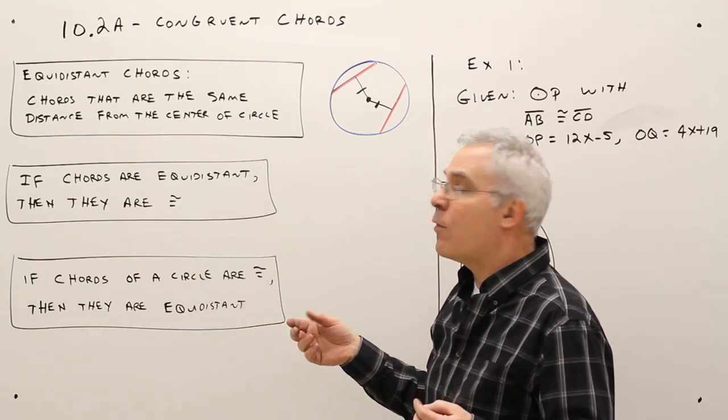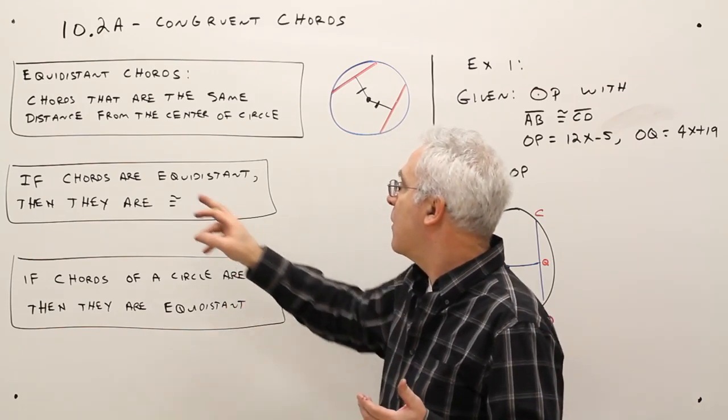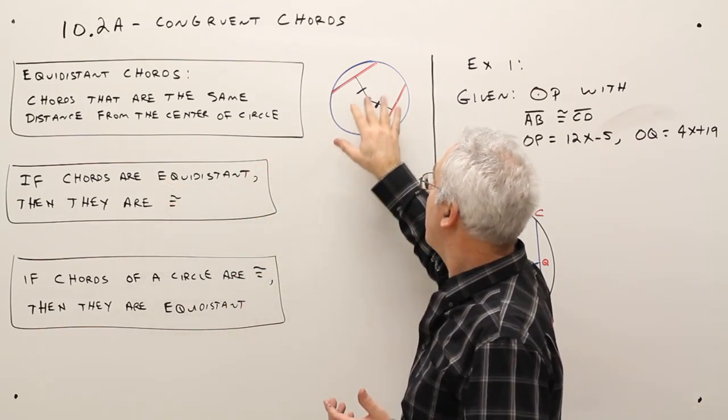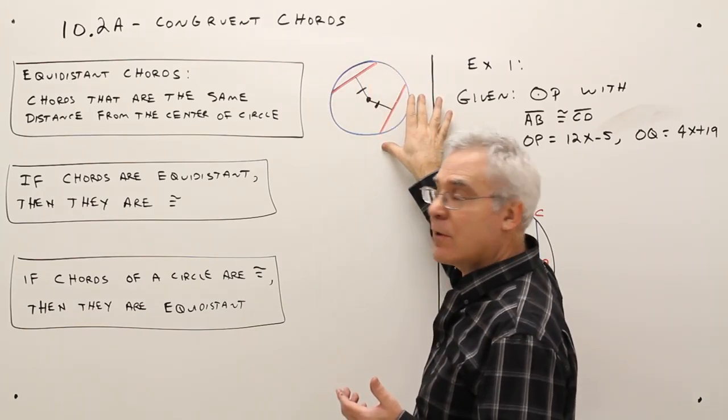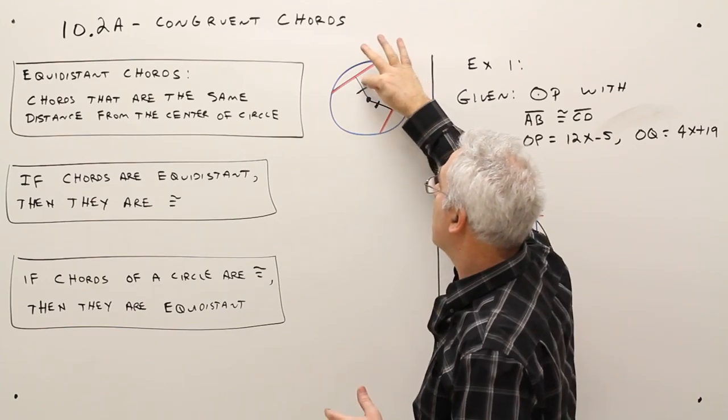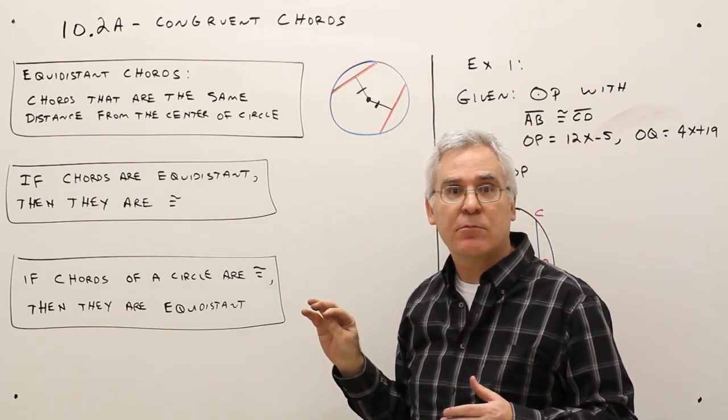Okay, then I've got two theorems, one's the converse to the other. If chords are equidistant, like this, then those chords are congruent. The converse: if I know that these two chords are congruent, then I know that they're equidistant.